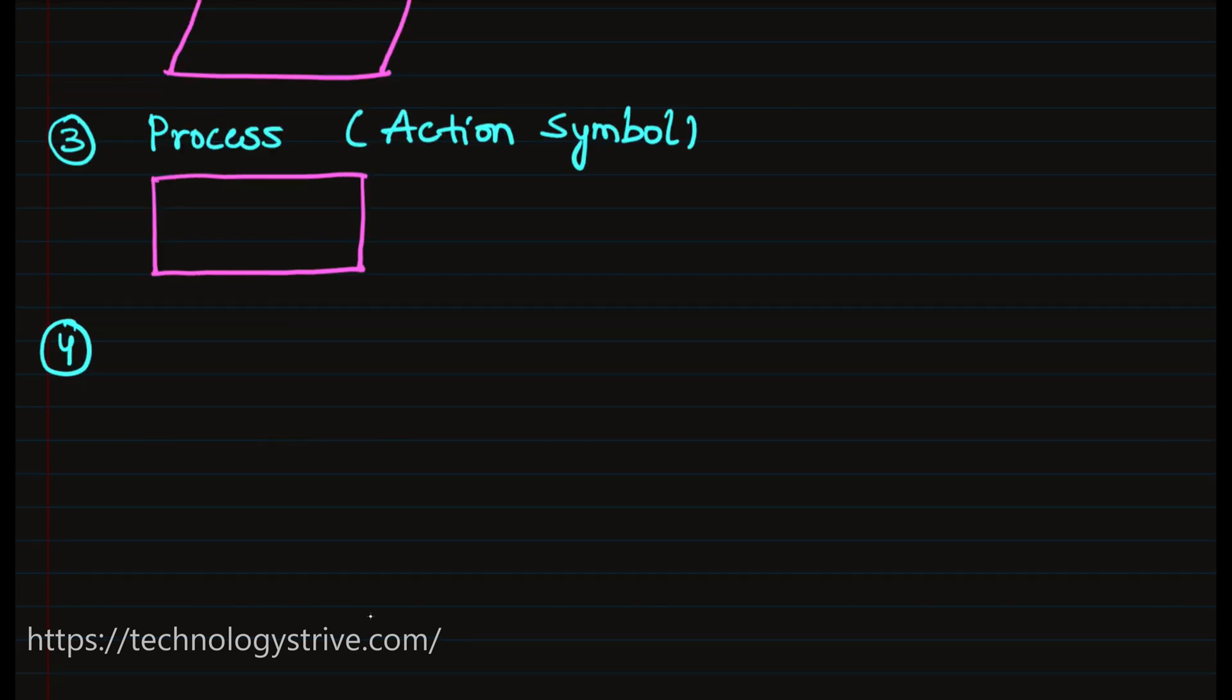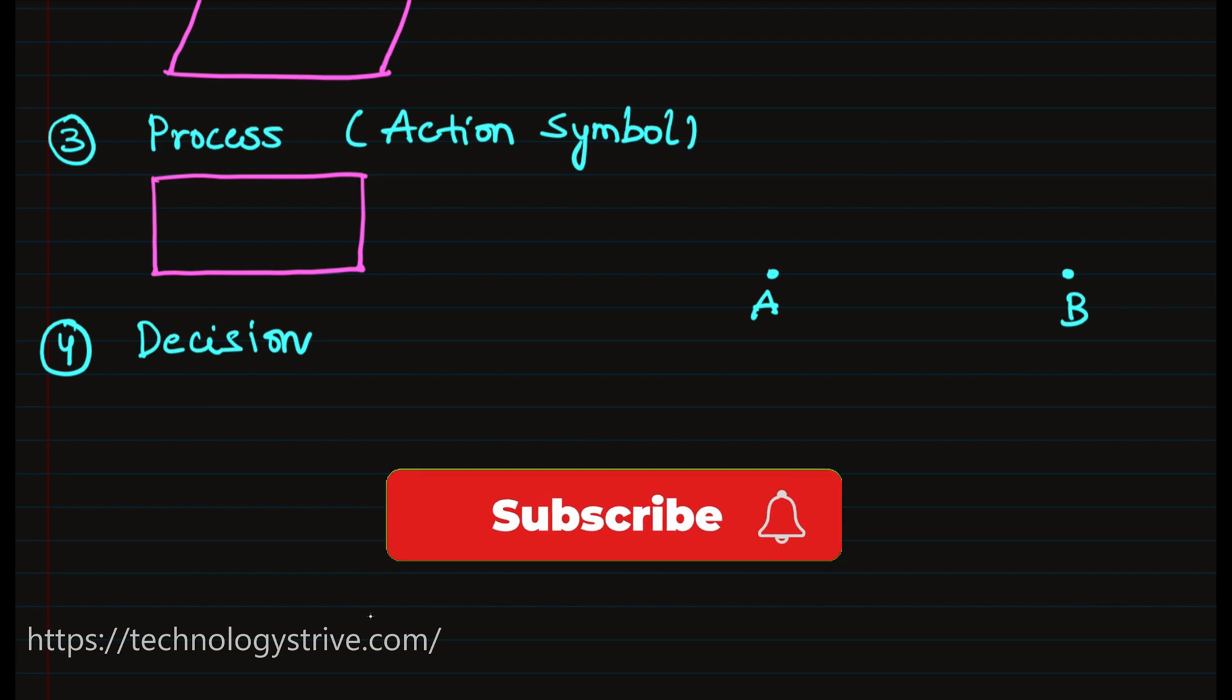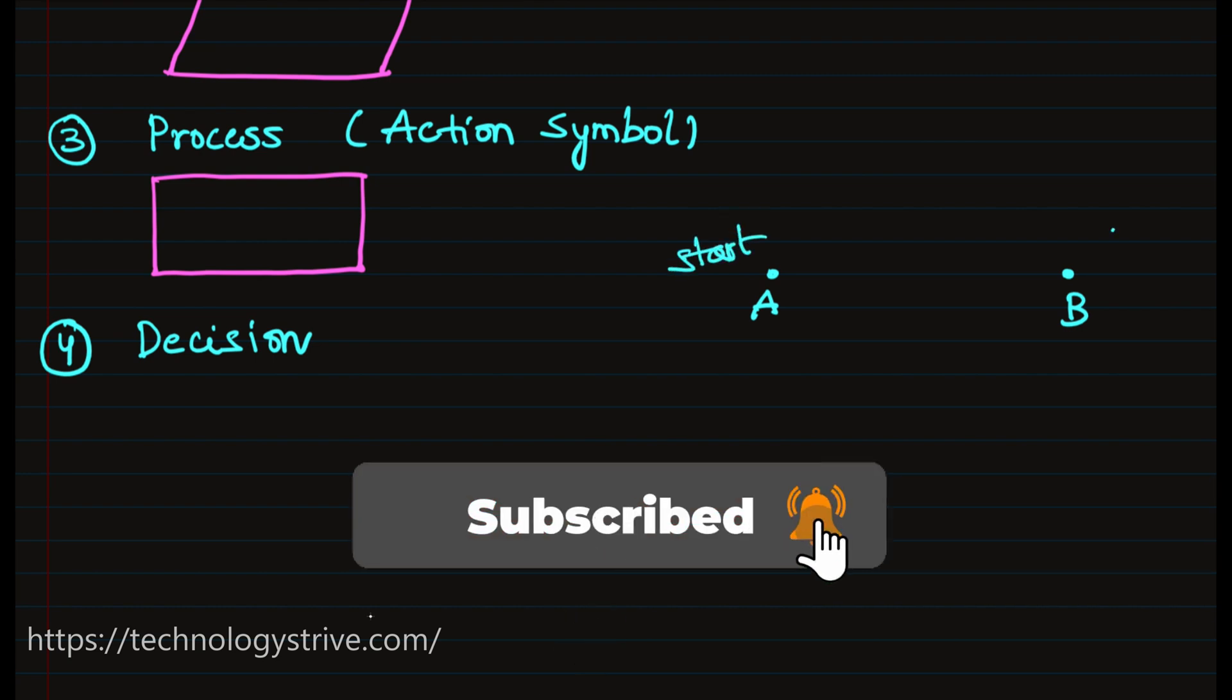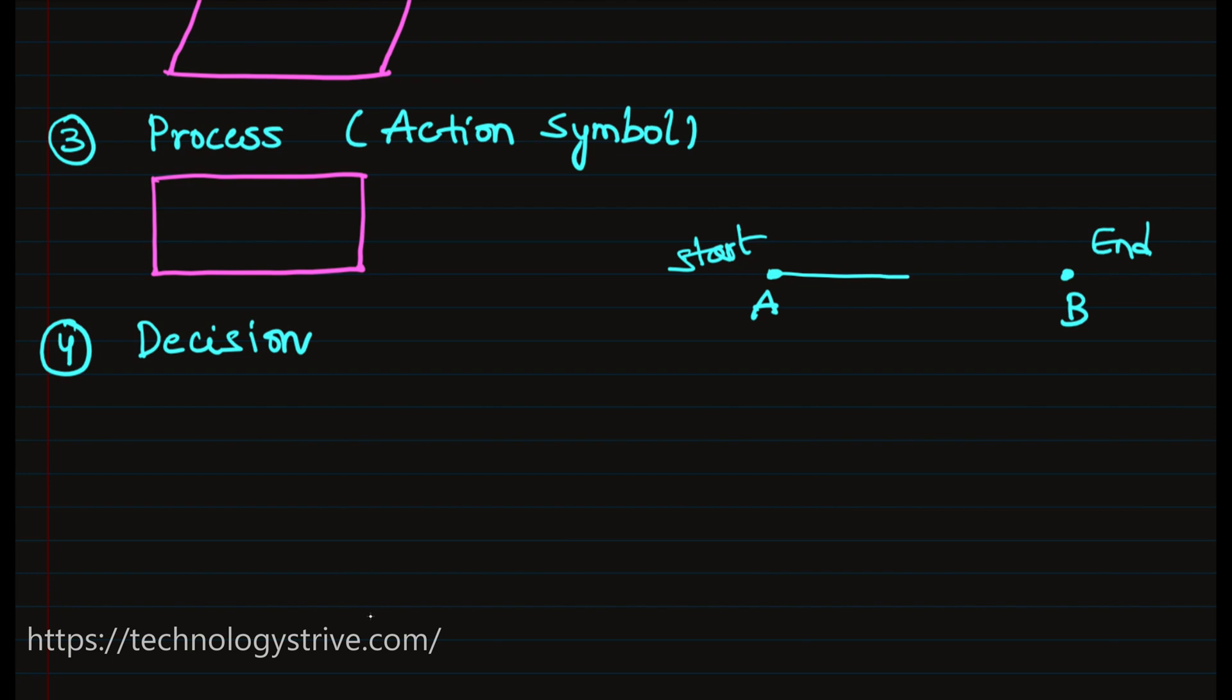The fourth one is decision. Again, same example we will take. For example, I want to reach position B and I am at position A. This is my starting point and this is my end point. So how will we do it? We will walk. After reaching some point, there is no path - the road is closed. Then what will we do?